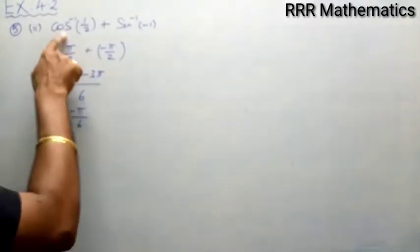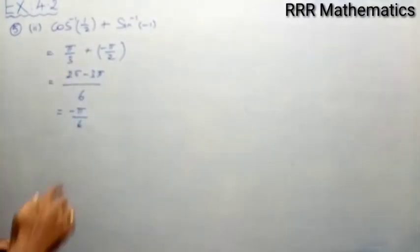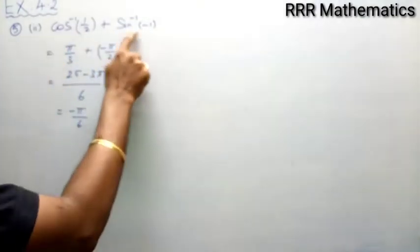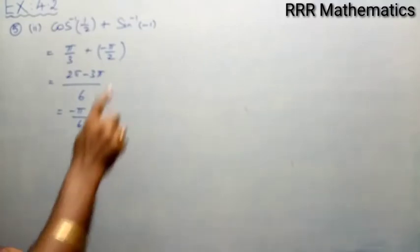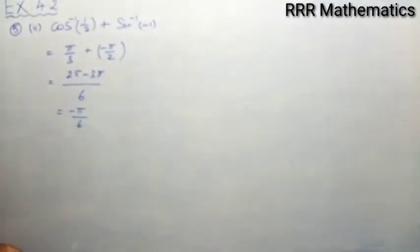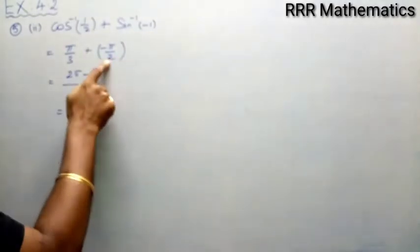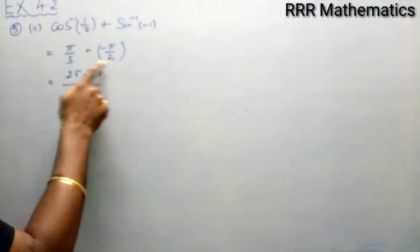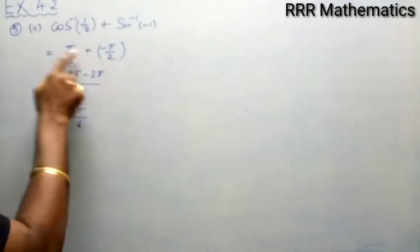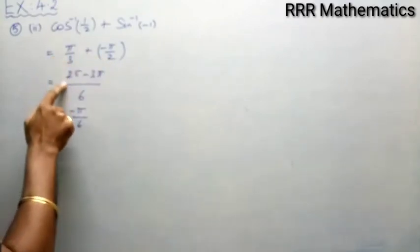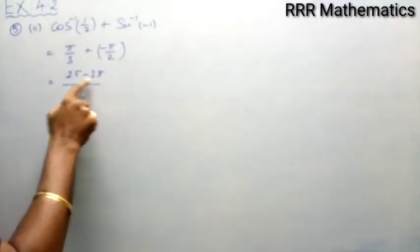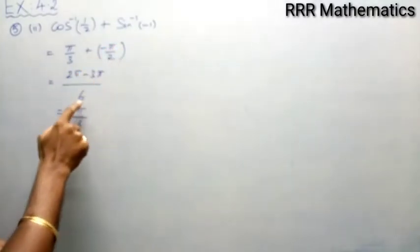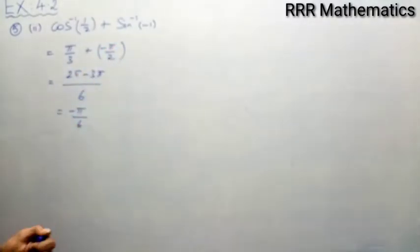So, cos inverse of half has principal value pi by 3. Sin inverse of minus 1: sin inverse of 1 gives 90 degrees, so sin inverse of minus 1 gives minus 90 degrees. Taking LCM — 3 twos are 6 — we get 2 pi plus into minus 3 pi, which gives 2 pi minus 3 pi, so the answer is minus pi by 6.